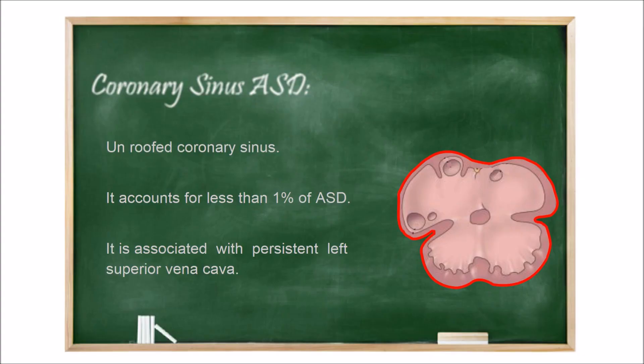Finally, coronary sinus atrial septal defect is caused by an unroofed coronary sinus, because part or the entire common wall between the coronary sinus and the left atrium is absent. This rarer form accounts for less than 1% of all atrial septal defects, and many of these patients also have a persistent left superior vena cava.